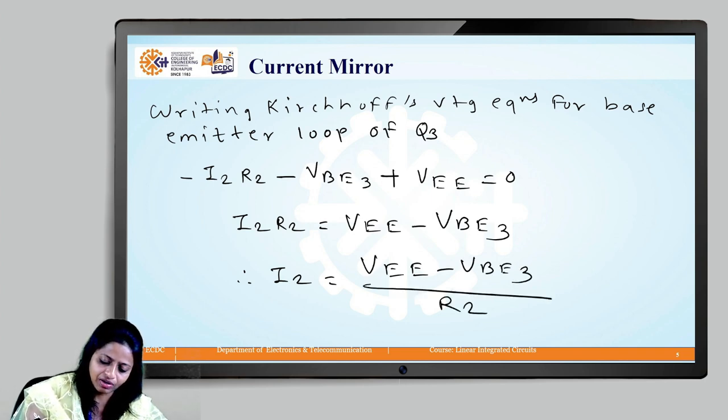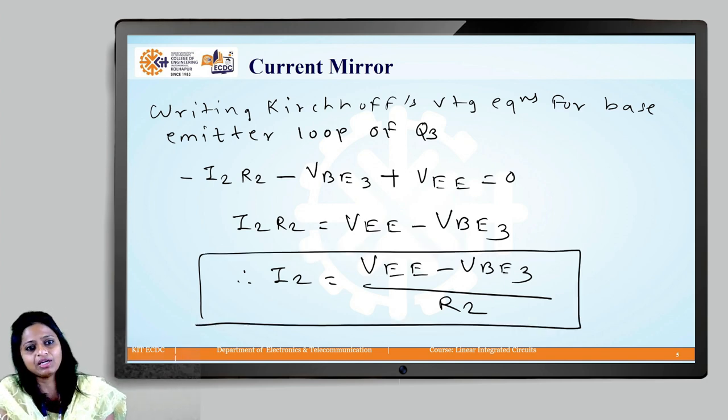This is how we can calculate the value of I2 that can be replicated at the collector terminal of Q3.